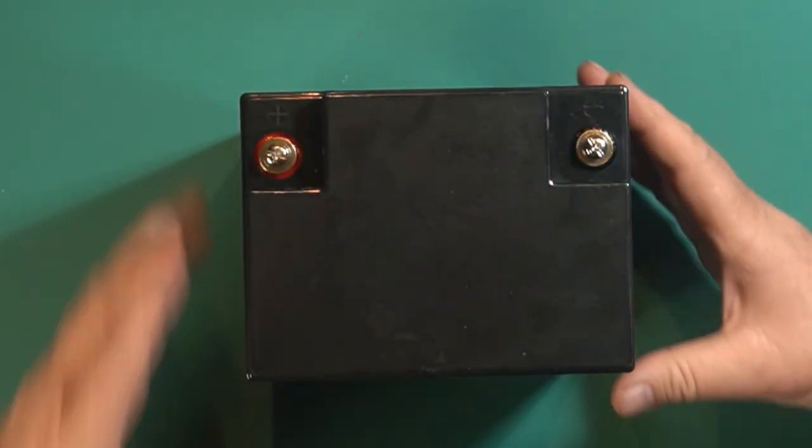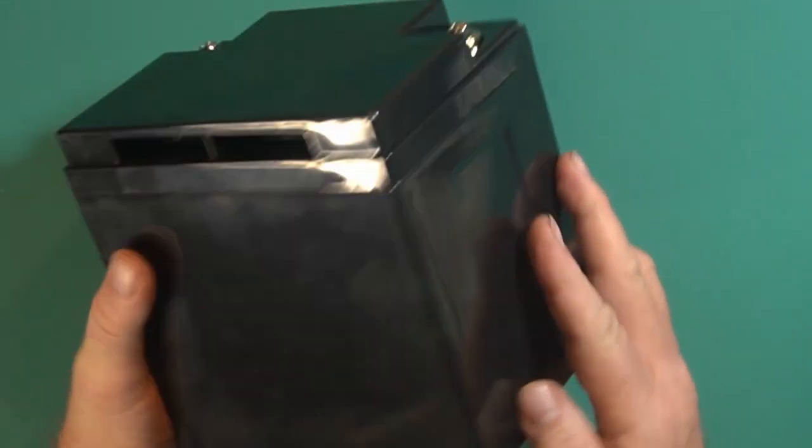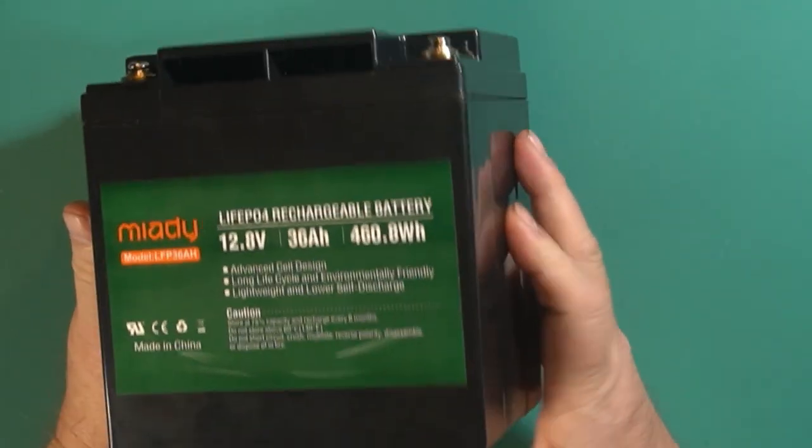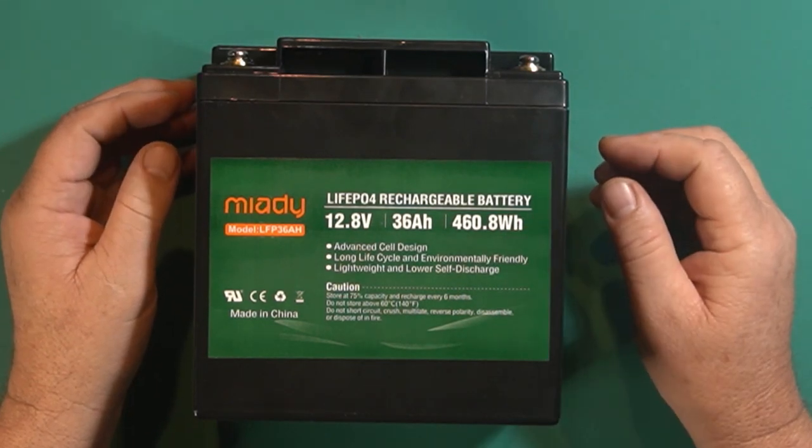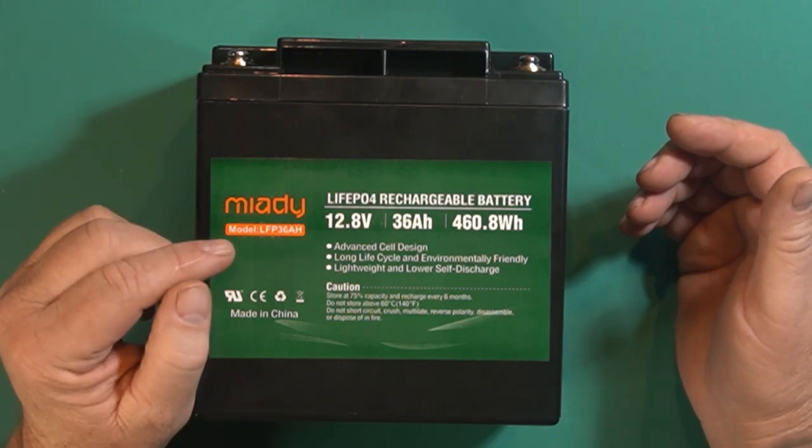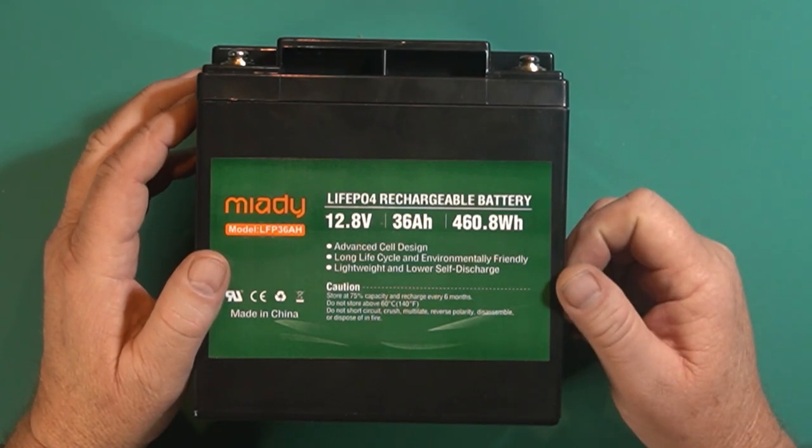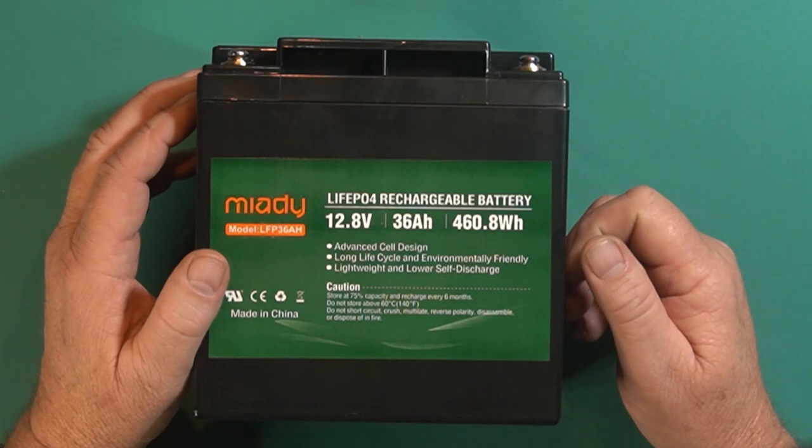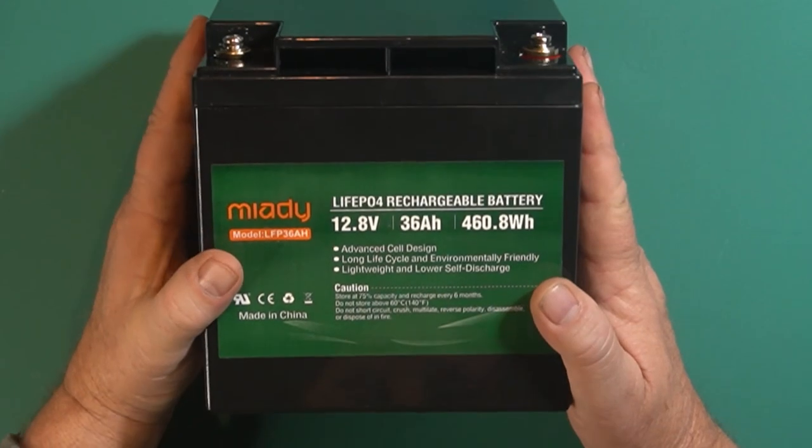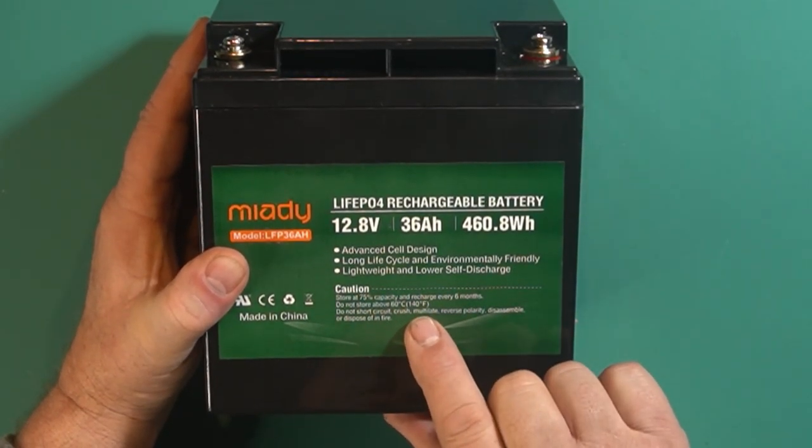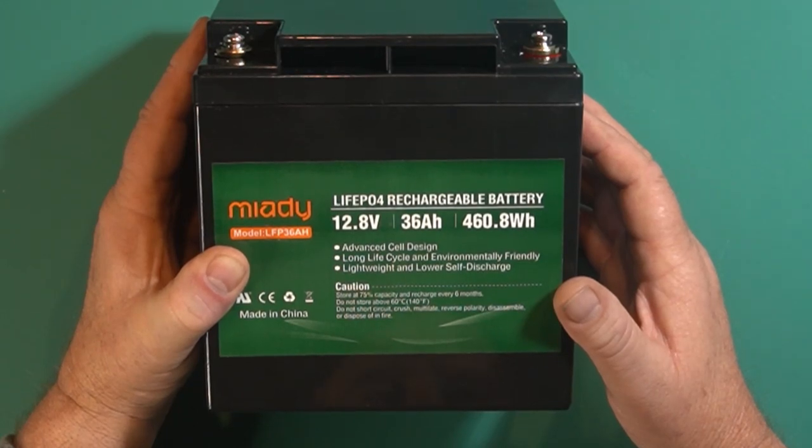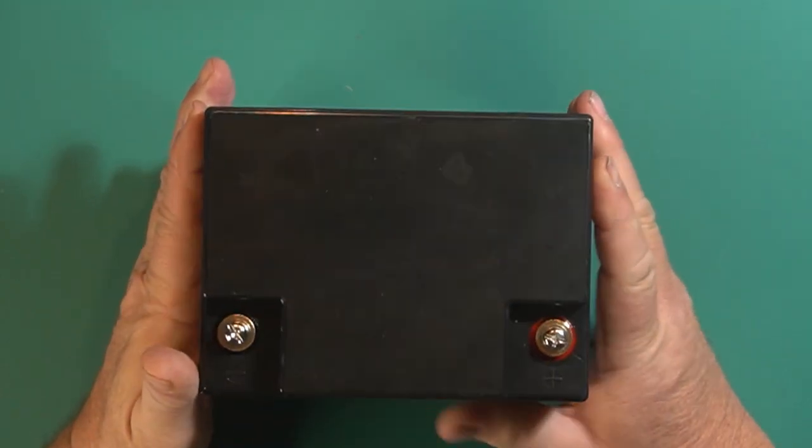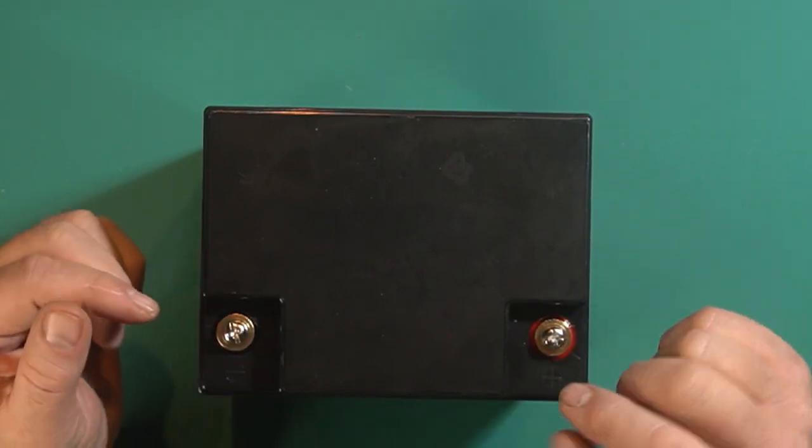Looking it over, I don't see any problems anywhere. Looks pretty good, looks like pretty well made. Here's your specs on it: 12.8V, 36 amp hour, 460.8 watt hours. Mioti is how I pronounce it, model LFP 36 amp hour. Advanced cell design, long life cycle, environmentally friendly, lightweight, and lower self discharge. It says caution: store at 85% capacity and recharge every six months. Do not store above 140 degrees Fahrenheit. Do not short circuit, crush, mutilate, reverse polarity, disassemble, or dispose of in fire. It has two screws on top, negative and positive. The positive is marked with red.